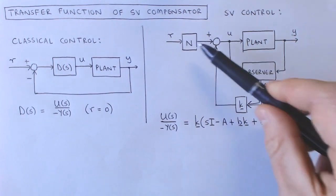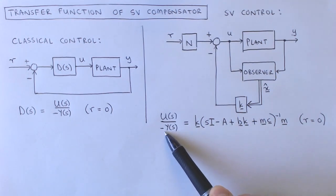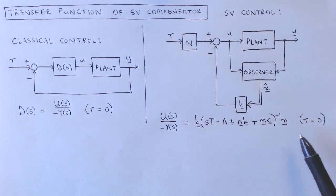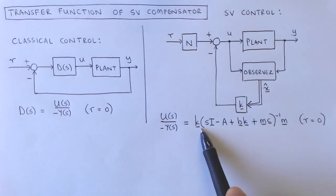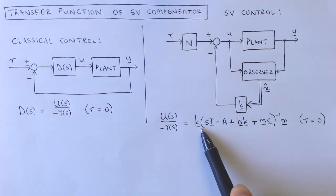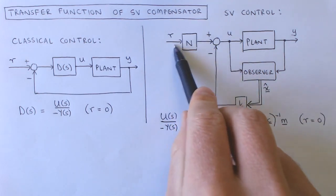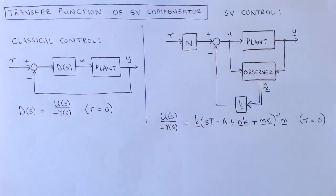Similarly, for a state variable compensator, we can describe the transfer function from minus the plant output y to the plant input u as this expression. Here we again ignore the reference input. Note that the order of the compensator transfer function is the same as the order of the plant. This result shows that the state variable compensator can equivalently be implemented as a classical controller. However, it might be significantly easier to design the state variable compensator by designing the state feedback, reference feed forward, and observer separately and then combining them, than designing a similar classical controller all at once.